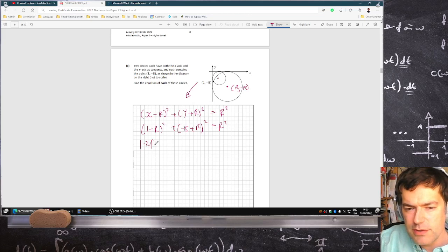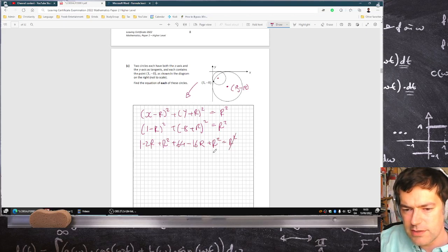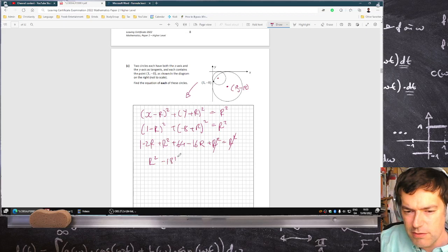1 minus 2r plus r squared plus 64 minus 16r plus r squared equals r squared. Cancel, cancel. r squared minus 18r plus 65 equals 0.